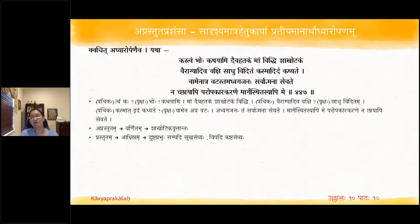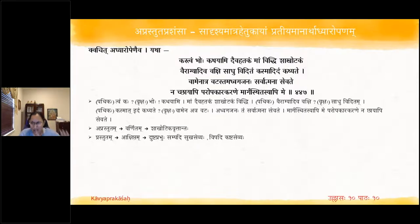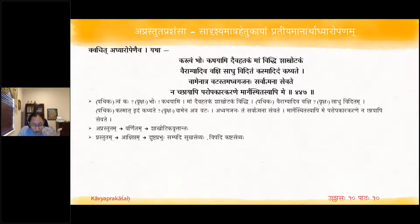The patika asks: kasmadidam kathite — why are you speaking in this manner? The vriksha says: vāmena atravataha — on my left side there is a banyan tree standing. Sarvatmana sevate — all other travelers who go on the road come and sit under the shade of that vata vriksha completely. Kintu marge eva aham tishthami — but I am standing right on the road, and even though I am on the path for paropakara karane, nobody comes and sits under my shade — na chaya api sevate.